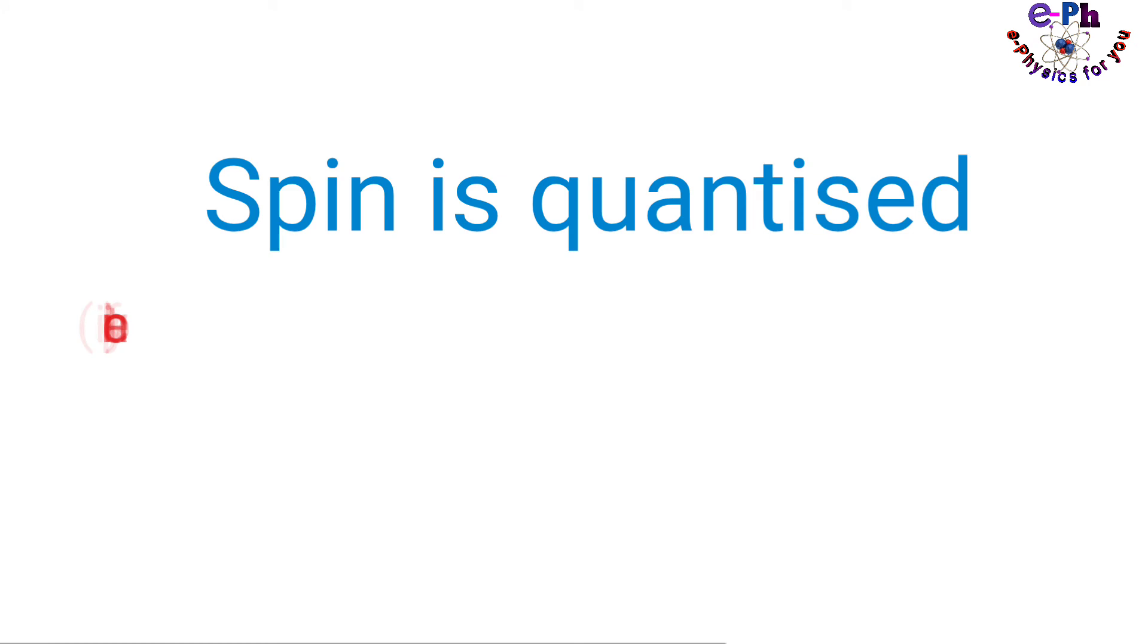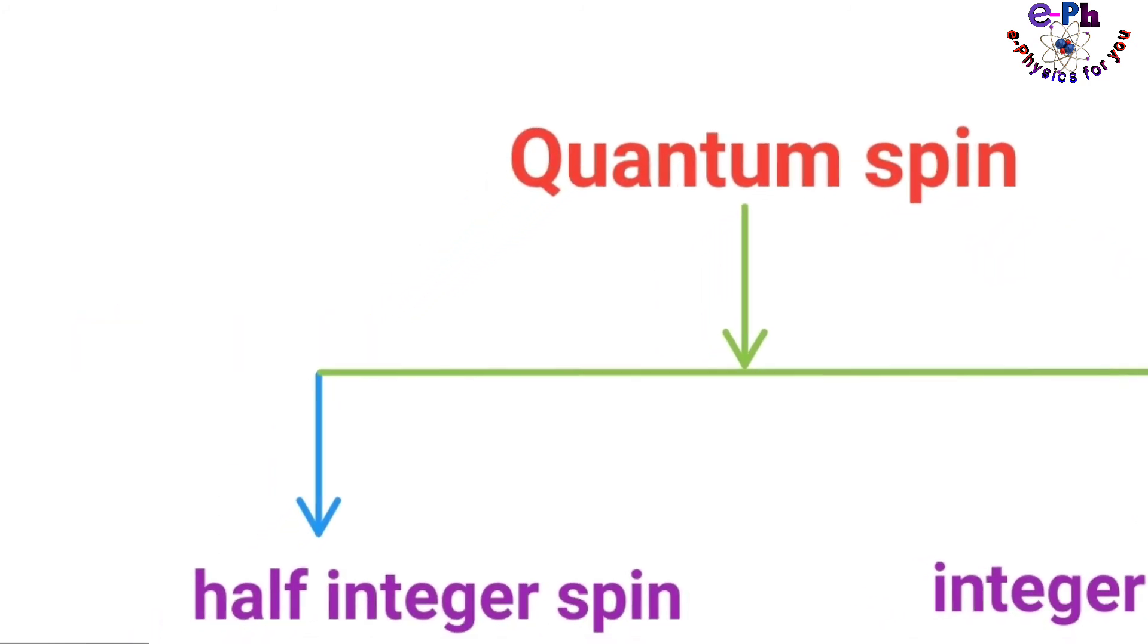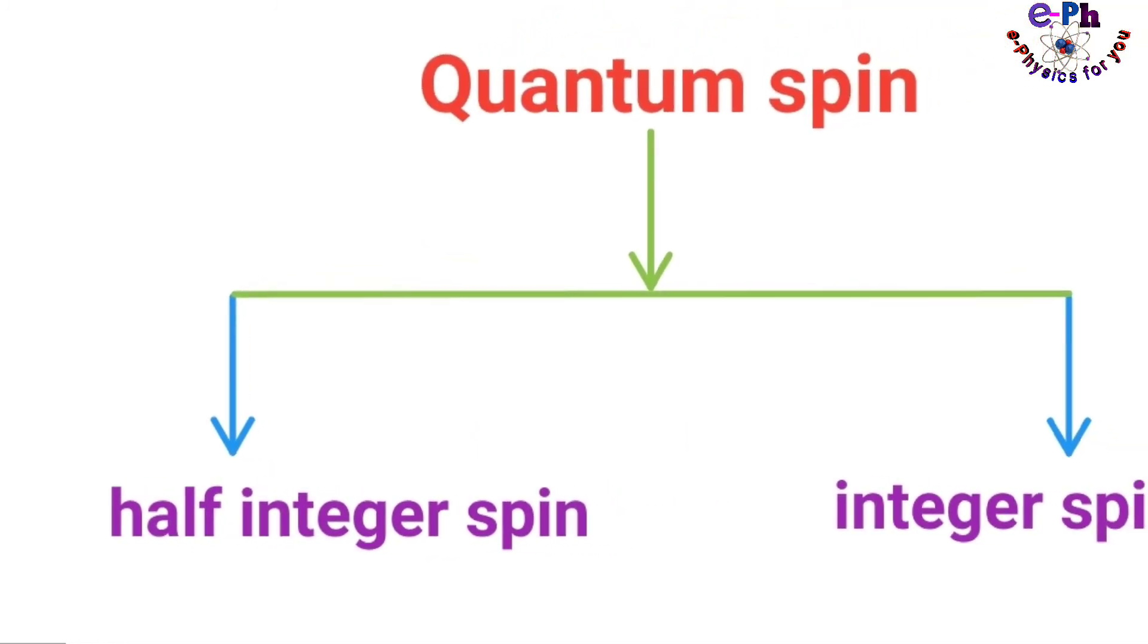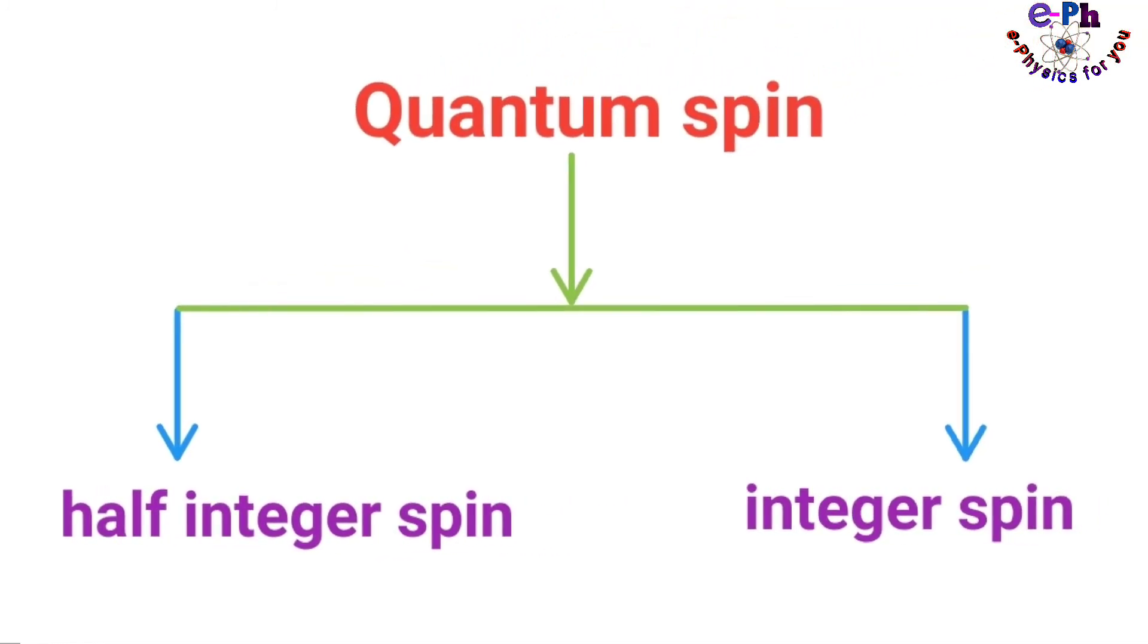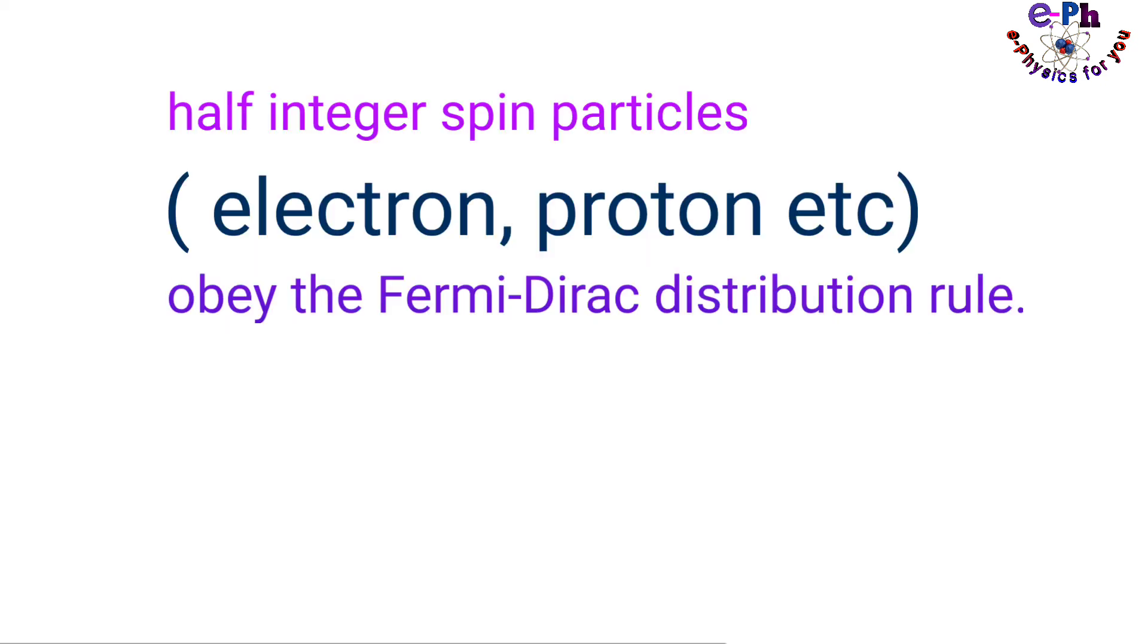Spin is quantized. Spin comes in two flavors: one is half-integer spin and the other is integer spin. Integer spin particles obey the Bose-Einstein distribution rule, and half-integer spin particles obey the Fermi-Dirac distribution rule.